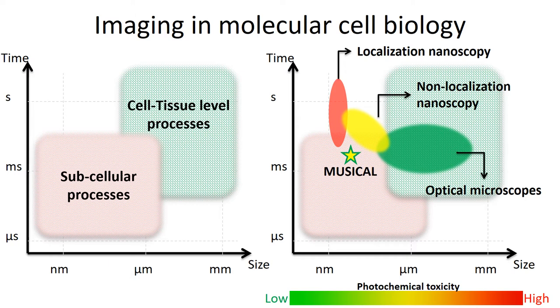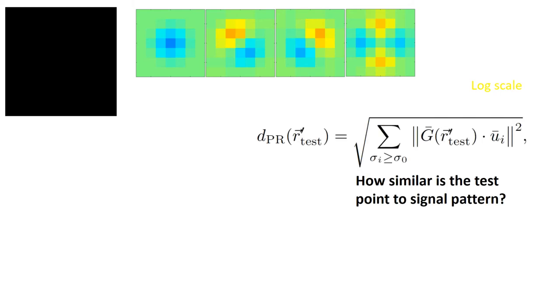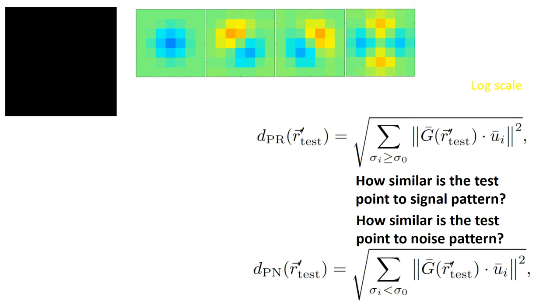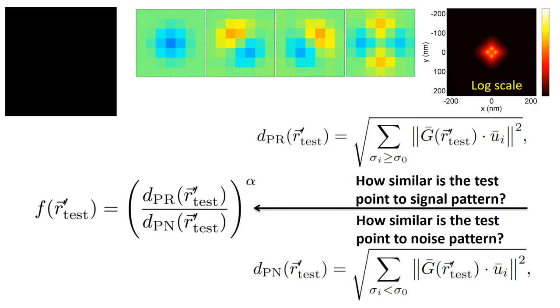In fact, the photo-toxicity of MUSICAL can be almost nil. In the next slide, the core of MUSICAL. Here we are seeing a video of blinking fluorophores. MUSICAL first computes eigen images of this image stack and classifies the eigen images as either signal or noise. After this classification, for a given test point, MUSICAL computes a distance which indicates similarity of the test point's image with the signal eigen images. Similarly, another distance is computed which indicates the similarity of the test point's image to the noise pattern. Then MUSICAL computes a simple ratio of these distances, and this gives the MUSICAL image.